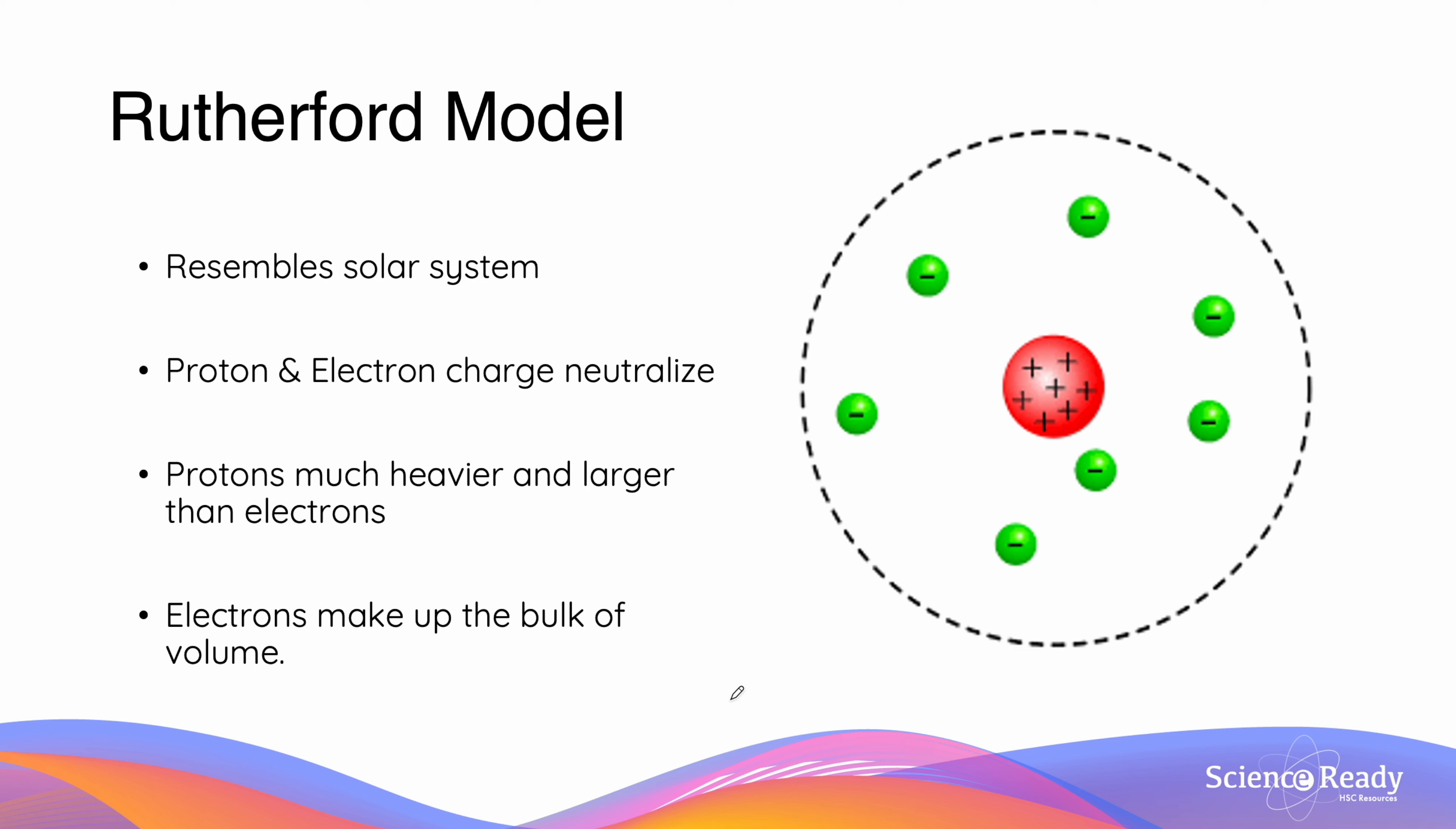The Rutherford model is the oldest of the atomic models which we will be studying and provides a good baseline understanding of atomic composition. As established earlier, the proton-electron charges neutralize each other. The protons, which make the nucleus quite dense, are similar in size and mass to the neutrons.